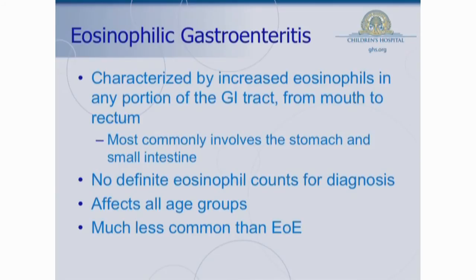Let's contrast eosinophilic gastroenteritis with eosinophilic esophagitis. It's also characterized by increased numbers of eosinophils in the GI tract, but it can be really anywhere in the GI tract from the very top to the very bottom. Most commonly it involves the stomach and the first part of the small intestine, but it really can be anywhere. One of the differences between this and EE is that there are less definitive numbers in terms of making a diagnosis — people use 15 or 20 eosinophils per high-powered field for EE, but it's much more difficult to do that with EG because there are already eosinophils present to begin with.